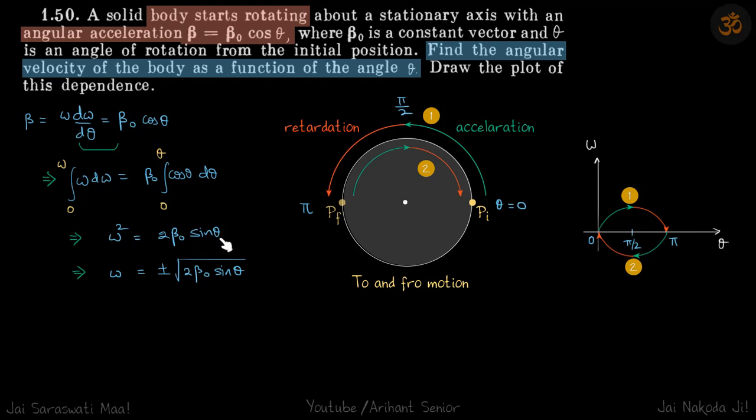So you can see here at theta equals 0, omega is 0. And that is expected because the body starts rotating. And when does it stop again? It stops again when theta is pi. So this point, let's say it is pi, it goes all the way to here and then the disk stops.